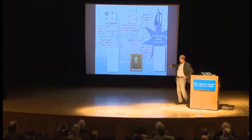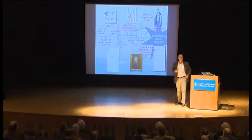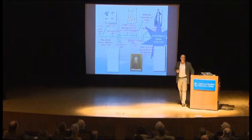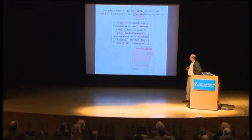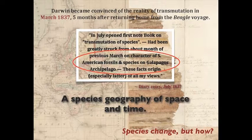To reiterate: October 1838, natural selection. All the 20 years after that, Darwin is refining his theory. In March 1837, five months after returning home, he opened the first notebook on the transmutation of species. What had struck him was the character of South American fossils and species on the Galapagos Archipelago — a species geography in space and time. He was realizing the juxtaposition of patterns of species relationship geographically as well as paleontologically in the fossil record. Species change — but how?